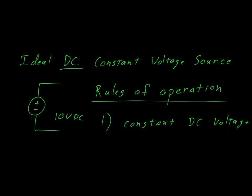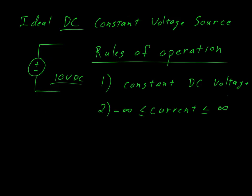Whichever we desire is what it will be. Second rule of operation: the current will do whatever necessary in order to maintain that voltage, in this case at 10 volts DC. If the load demands, the current will go to negative infinity. If the load demands, the current can go to positive infinity. Those are the rules you need to remember about an ideal constant voltage source.